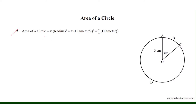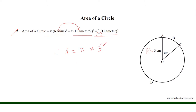Area of circle equals pi times the square of the radius, or equivalently pi times the square of the diameter divided by 4. As we know, the radius of the circle equals half of the diameter. It is given that the radius equals 3 cm. Therefore, the area of this circle equals pi times 3 squared, which results in 9 pi square centimeters.